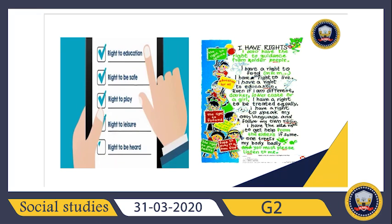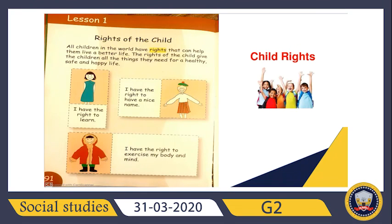Now I hope the topic is clear. Let us open our books to page 91 from your student textbook — Rights of the Child. Let me read: All children in the world have rights that can help them live a better life. The rights of the child give children all the things they need for a healthy, safe, and happy life. So if you have rights, you can live a better life and stay happy.